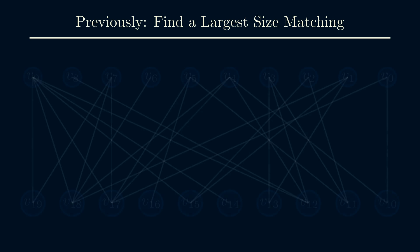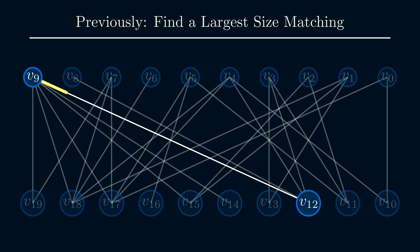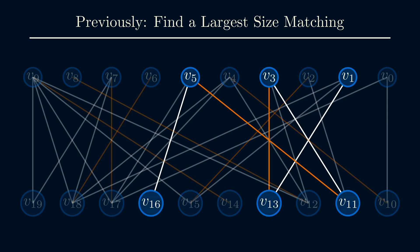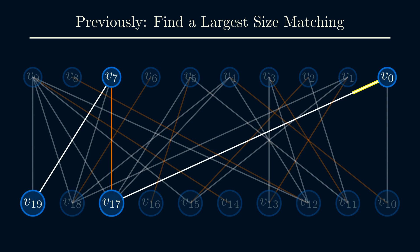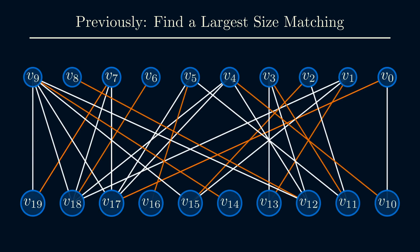In a previous video, I talked about how we can find the largest size matching in an unweighted graph. Because it's unweighted, the algorithm in that video doesn't consider edge weights, so it can return a matching that's suboptimal. I tried to make this video so that you don't really need to watch that video beforehand. But if you do want more information, I'll leave a link to that video below.